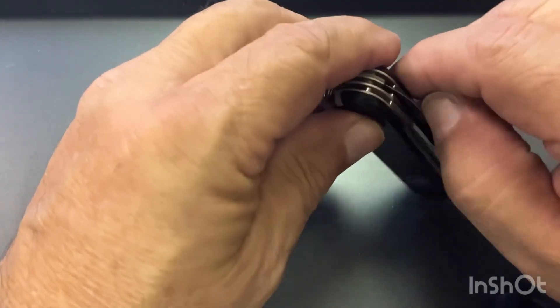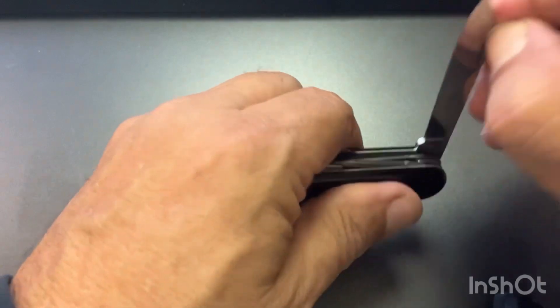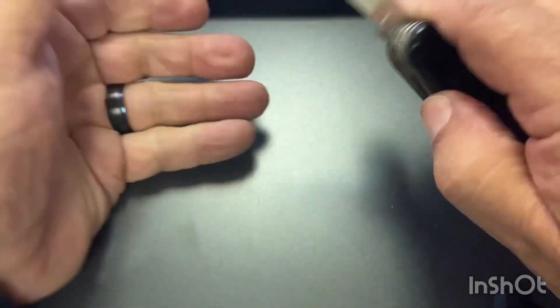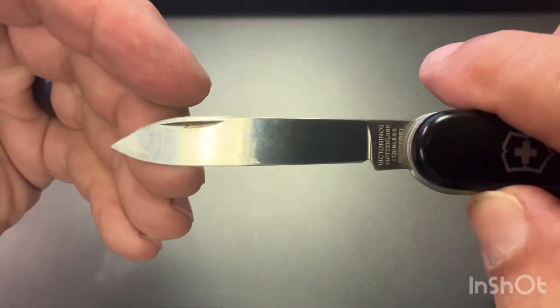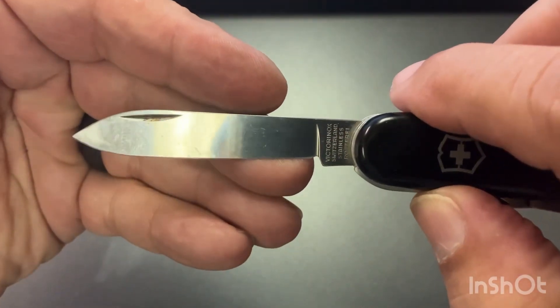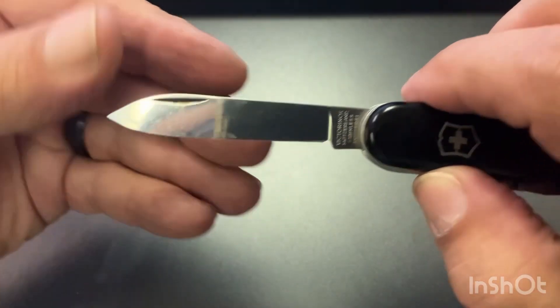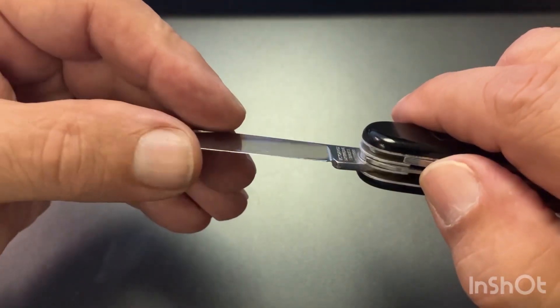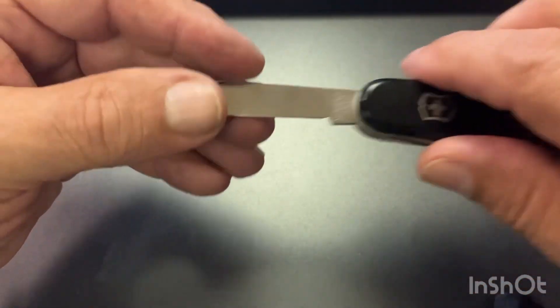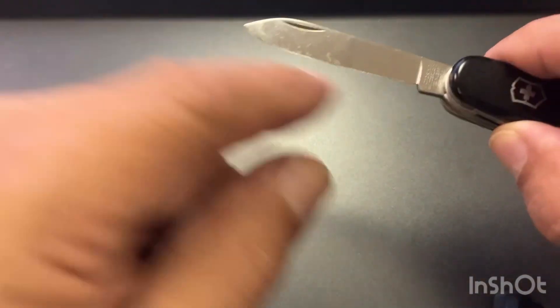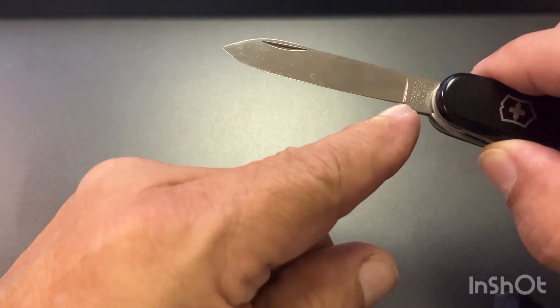Then you're going to have a main blade here, got a spear, like a spear point tip on it. These are about two and a half inches long, from tip to tang, so from the tip to right here is about two and a half inches.